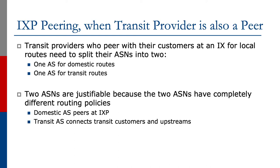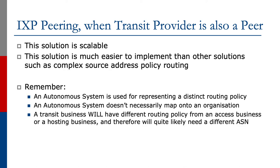Transit providers who peer with their customers at an IXP for local routes need to split the ASNs into two: one AS for domestic routes and one AS for transit routes. Two autonomous system numbers are entirely justifiable because the two ASNs have completely different routing policies. The domestic AS peers at the IXP; the transit AS connects transit customers and upstreams. This solution is scalable and much easier to implement than other solutions such as complex source address policy routing, which some operators have attempted in the past.